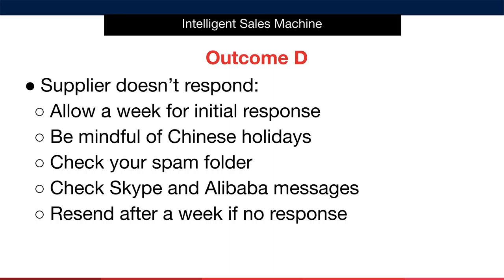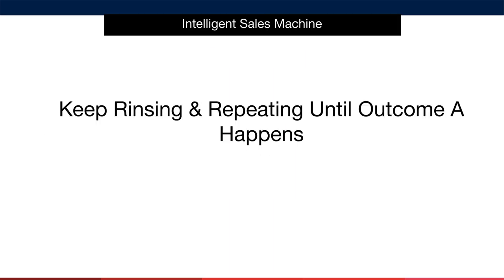Also check other forms of contact such as Skype or Alibaba Messenger, as suppliers sometimes respond there instead of email. If you receive no response within a week, resend a shortened version and give them another week to respond. After that, it's likely sensible to move on — but only if there weren't any Chinese holidays happening at the time you sent the first email. These holidays will affect the timeframe and you really must take this into consideration before becoming impatient with your supplier.